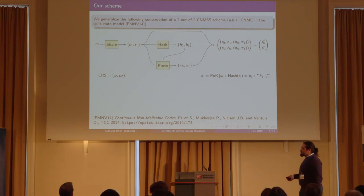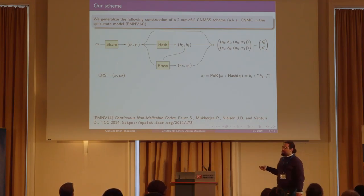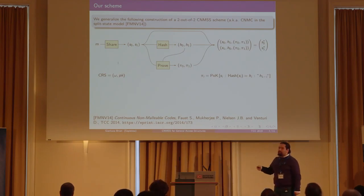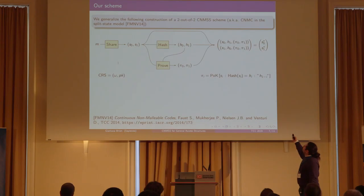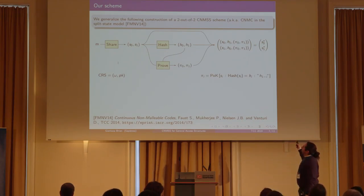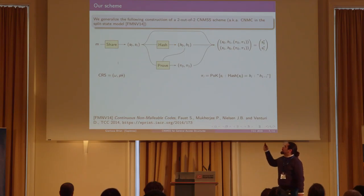We construct our scheme by generalizing the following construction of a two-over-two continuous non-malleable secret sharing scheme, also known as a continuous non-malleable code in the split-state model. Upon input M, we secret-share obtaining shares S0 and S1, then compute the hash of each share, and compute a zero-knowledge proof of each share being the hash of the respective share. Note that the zero-knowledge proof adopts labels, using the other hash that was not used in the proof. We pack everything to obtain new shares S0* and S1*, where the CRS is the CRS for the proof algorithm plus the public key for the hash algorithm.